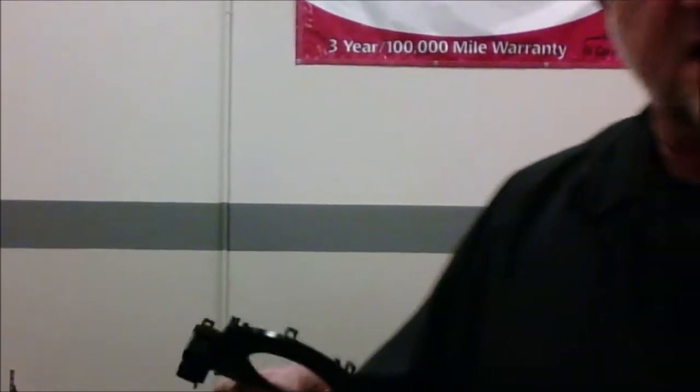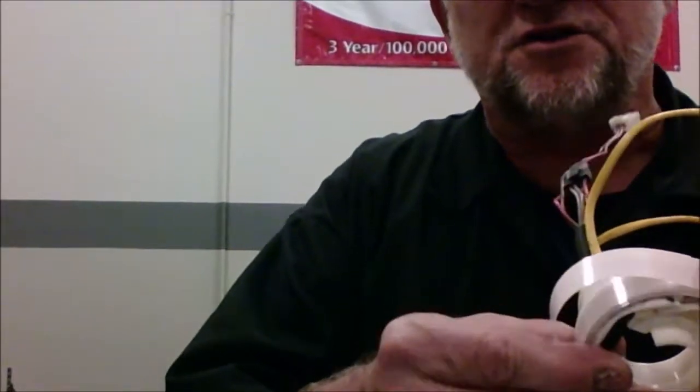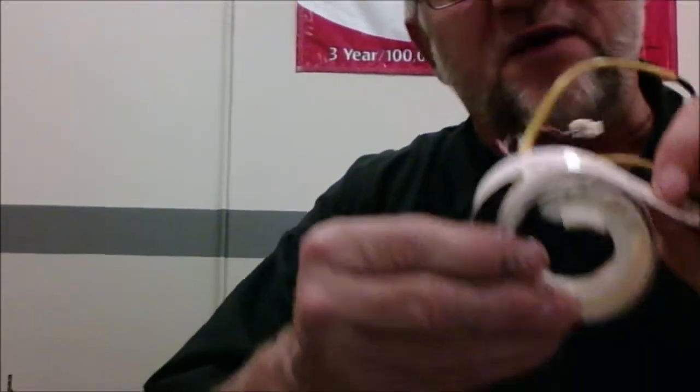As you can see, a clock spring is nothing more than a ribbon tape. What this allows you to do is turn your steering wheel one direction and this tape may get looser and looser, and then when you go back the other direction it'll get tighter and tighter. That's kind of how these work.